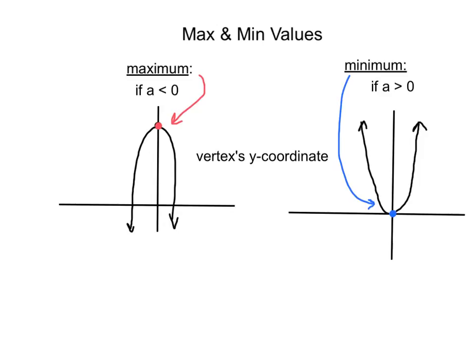Next, we cover maximum and minimum values. If a is less than 0, the parabola opens down, and the maximum value is the vertex's y-coordinate — the highest point of the parabola. For example, if the vertex is (0, 5), the maximum is 5. If a is greater than 0, the parabola opens up, and the minimum value is the vertex's y-coordinate — the lowest point. For example, if the vertex is (0, 0), the minimum is 0.